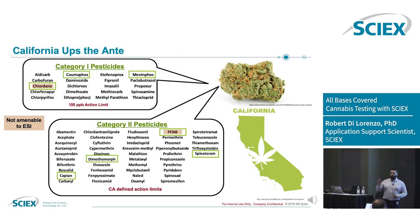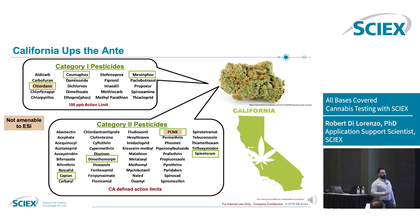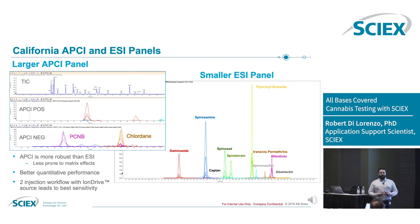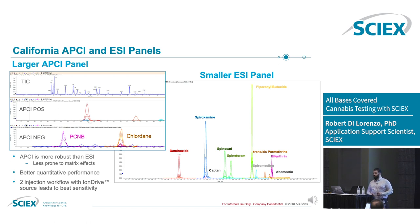Then California came online and said hold on, we're going to add a few more pesticides and make it a little more challenging. Specifically, they added some compounds that aren't amenable to electrospray and a lot more compounds that are traditionally done by GC-MS, and set the limits a little bit lower. So we went back to the drawing board and created a new method that is more APCI-heavy — atmospheric pressure chemical ionization, which allows you to ionize things that don't have traditionally ionizable groups like hydroxyl groups or carboxylic acids.